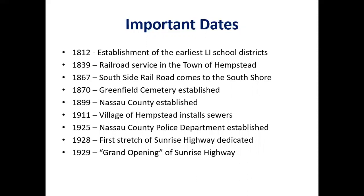Another important date is when the Southside Railroad comes to the South Shore. The first railroad to come out to this area was around 1839, in the village of Hempstead. Before that, people in Freeport and Belmore along the South Shore had to take a stagecoach to Hempstead to get on that train. It's not until 1867 when the Southside Railroad comes our way — a real game changer, because these South Shore communities were quite isolated. The railroad starts bringing in new people, and communities begin developing as resorts.